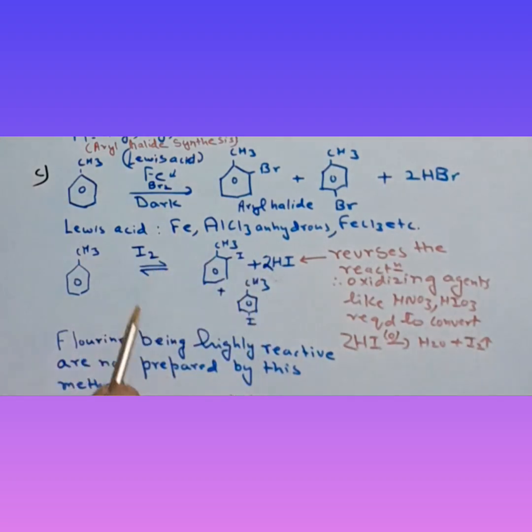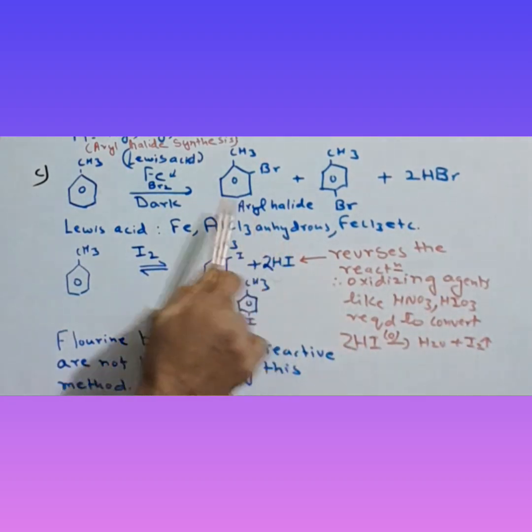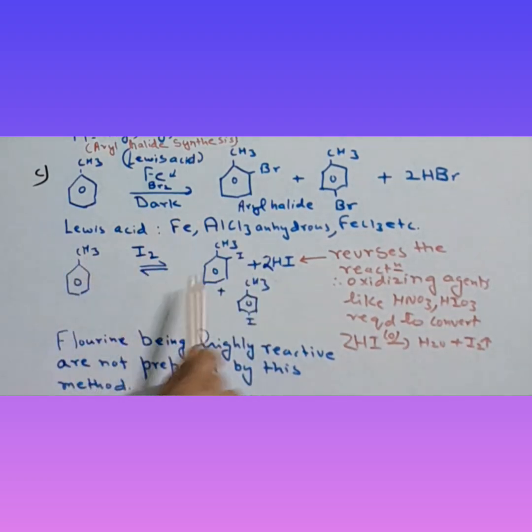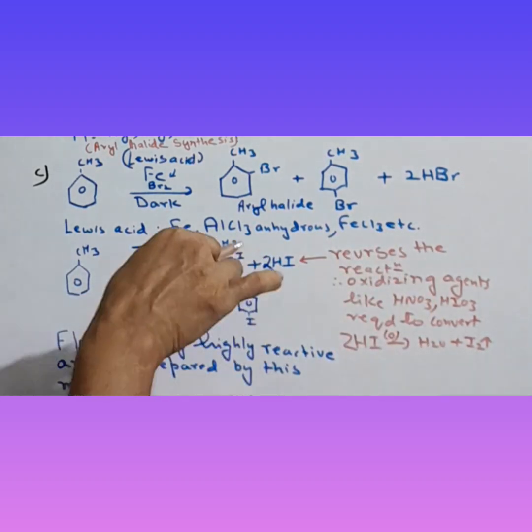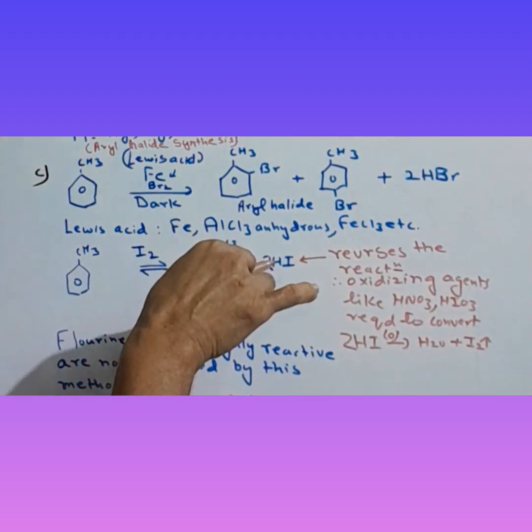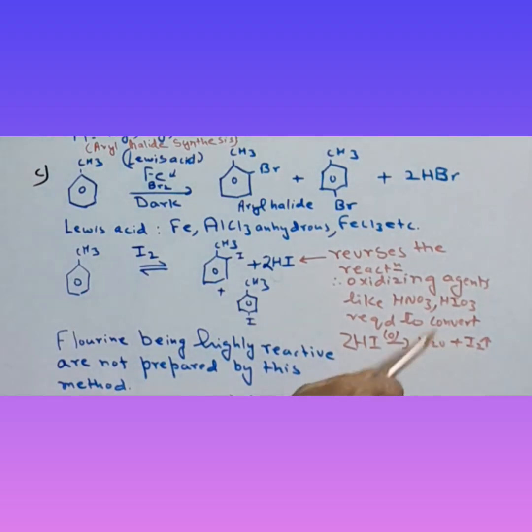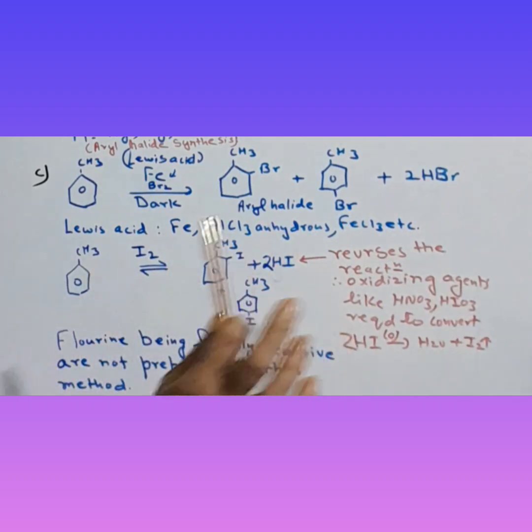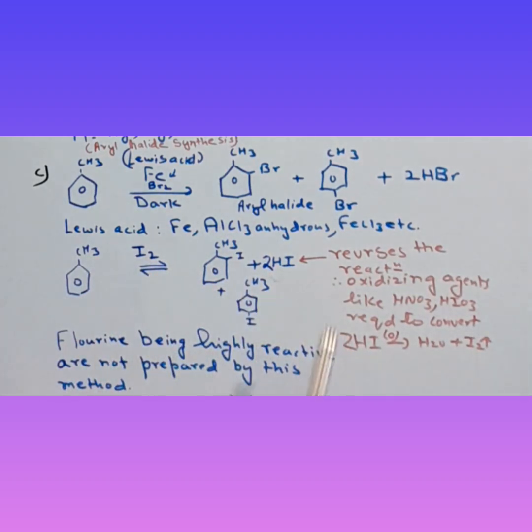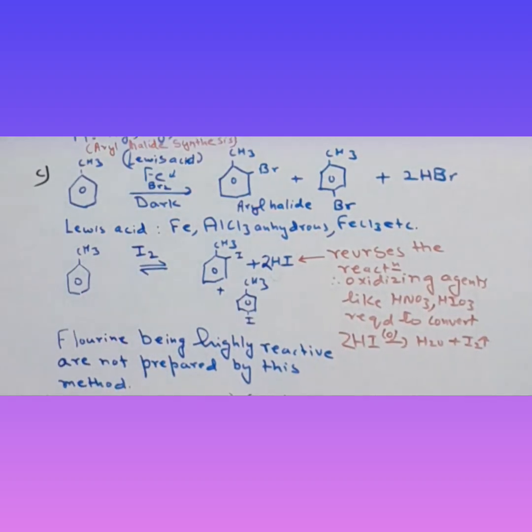To eliminate HI, we use oxidizing agents like nitric acid or iodic acid to convert HI to water and iodine. Iodine is regenerated, so the reaction keeps proceeding in forward direction. We oxidize HI to form harmless water and iodine, which comes back to carry the reaction forward. Fluorine, being highly reactive, is not prepared by this method.